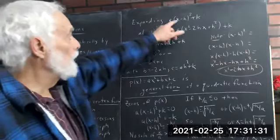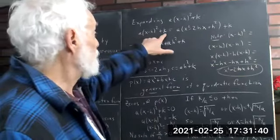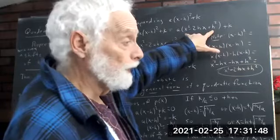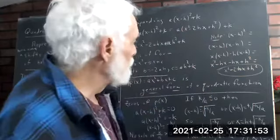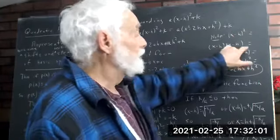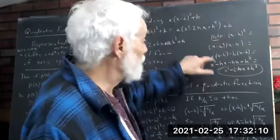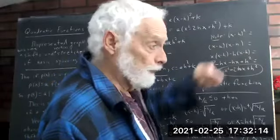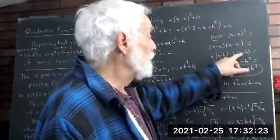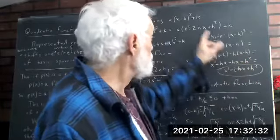We have this vertex form, a(x−h)²+k, and we can expand it. a·(x−h)² + k equals a·(x²−2hx+h²)+k, because (x−h)² = (x−h)(x−h). By the distributive law, (x−h)(x−h) = x(x−h) − h(x−h) = x²−hx − hx+h² = x²−2hx+h². So we have that result.